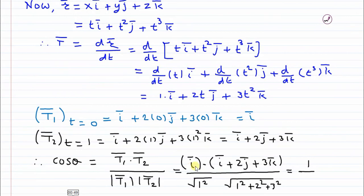Now here we will have dot product of only i dot i because i dot j is 0 and i dot k is also 0. So i dot i they are having coefficient 1 into 1, so answer is only 1. Root 1 square that is 1 and this is root of 14.